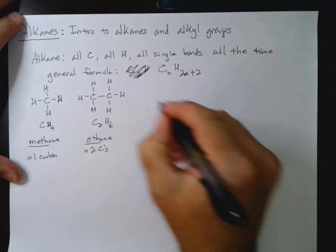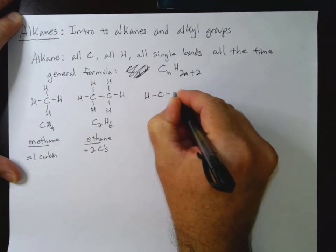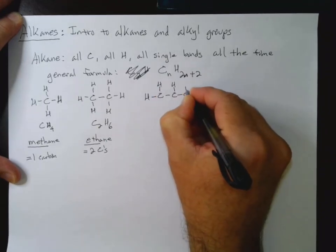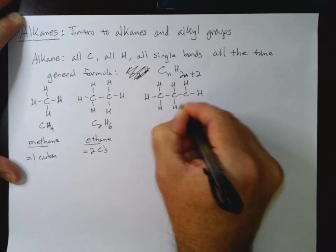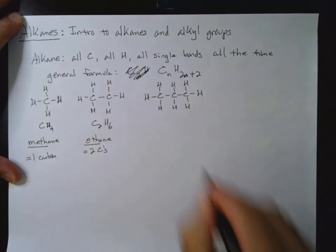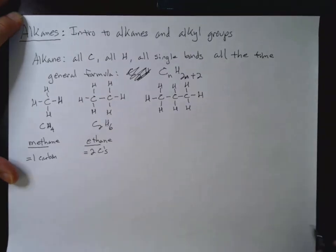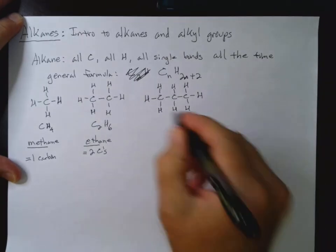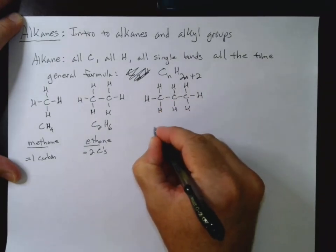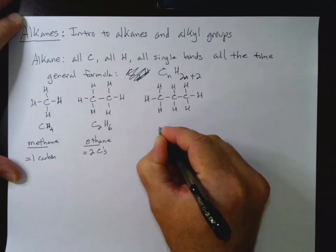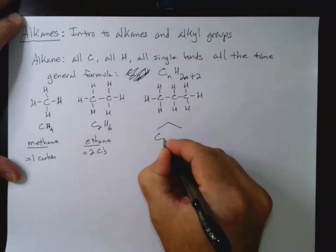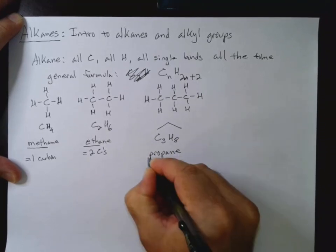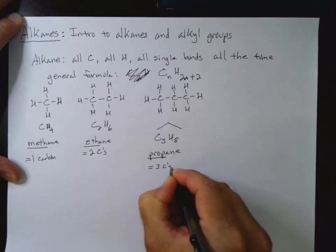Now we can continue on and look at 3 carbons. And once you start getting to longer chains, it's helpful to use the bond line structures. So for example, my propane here, I can draw as follows. One, two, three, like that. So C3H8. And this is propane, where prop equals 3 carbons.